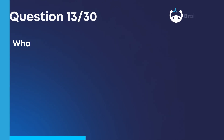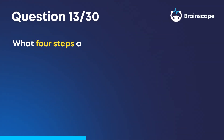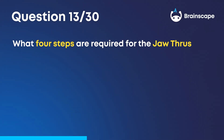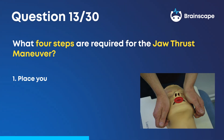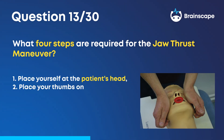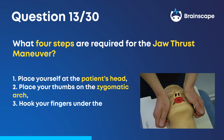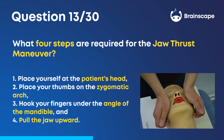Question 13. What four steps are required for the jaw thrust maneuver? One, place yourself at the patient's head. Two, place your thumbs on the zygomatic arch. Three, hook your fingers under the angle of the mandible. And four, pull the jaw upward.